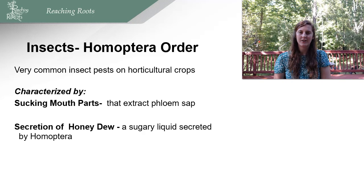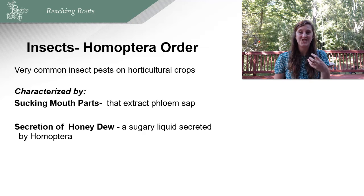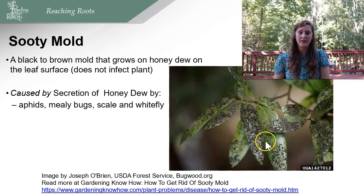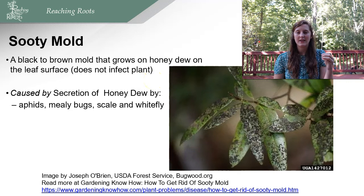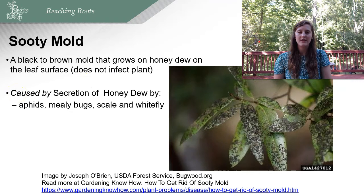Another characteristic of insects in the Hemiptera order is the secretion of honeydew — a sugary liquid secreted by the Hemiptera. This honeydew can cause further issues such as invasion by fungal pathogens. For example, sooty mold is a black or brown mold that grows on honeydew on leaf surfaces. It doesn't necessarily infect the plant, but it can cause the plant to get less sunlight. It's caused by secretion of honeydew from aphids, mealybugs, scale, and whitefly.